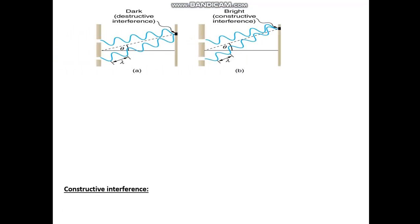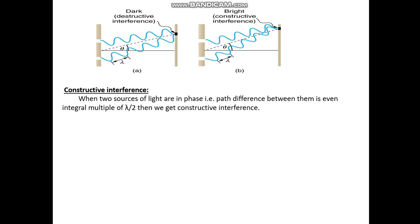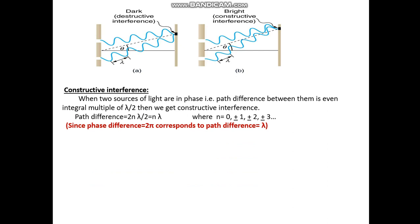Constructive interference occurs when two sources of light are in phase, that is the path difference between them is an even integral multiple of lambda by 2. Path difference equals 2n times lambda by 2, where 2n implies an even number, simplifying to n lambda, where n equals 0, plus or minus 1, plus or minus 2, plus or minus 3. Since phase difference of 2pi corresponds to path difference lambda, the phase difference delta phi equals n times 2pi, where n equals 0, plus or minus 1, plus or minus 2, and so on. The point is bright.